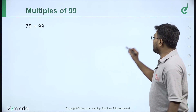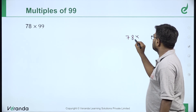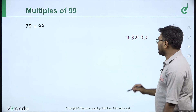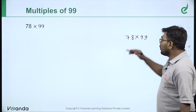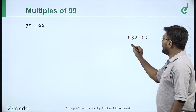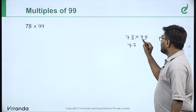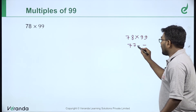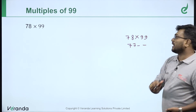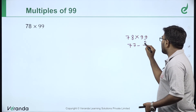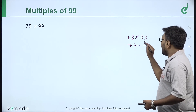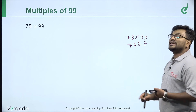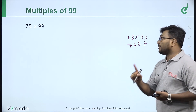Example: 78 into 99. Here 2 digits and 2 digits of 9s — equal. First step: 78 minus 1 = 77. Second step: 2 gaps, 7 gives 2, 7 gives 2. Answer: 78 into 99 is 7722.